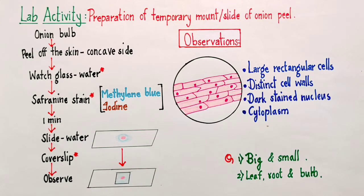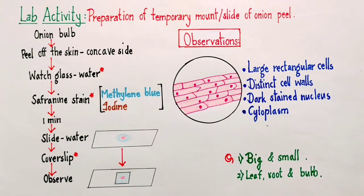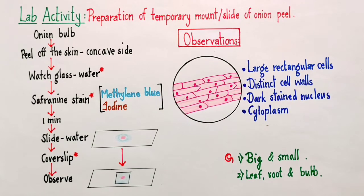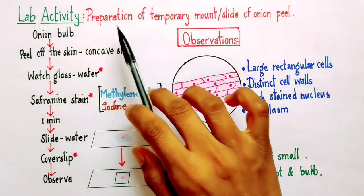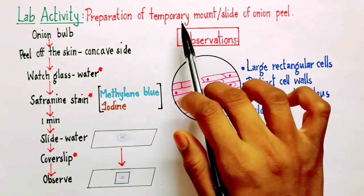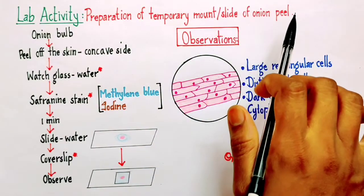Hello students, this is Jayashree. In our previous video, we discussed about the discovery of cells. In this video, we are going to see how to prepare a temporary slide or temporary mount of onion peel.